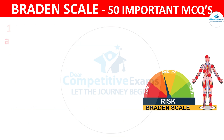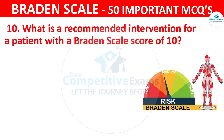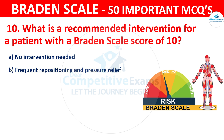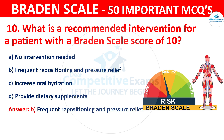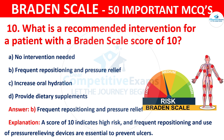Question number ten: What is the recommended intervention for a patient with a Braden scale score of 10? The options are no intervention needed, frequent repositioning and pressure relief, increase oral hydration, or provide dietary supplements. The correct answer is B — frequent repositioning and pressure relief. A score of 10 indicates high risk, and frequent repositioning and use of pressure-relieving devices are essential to prevent ulcers.